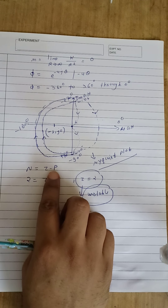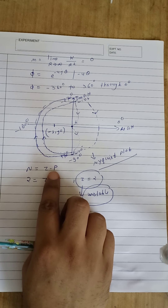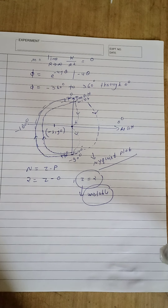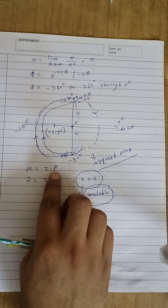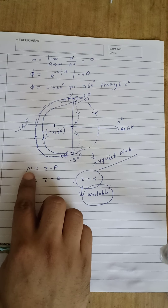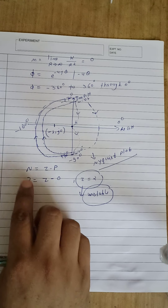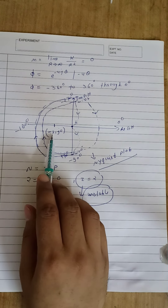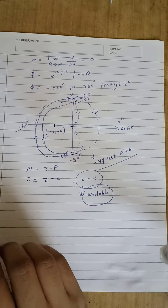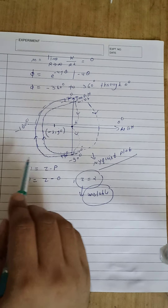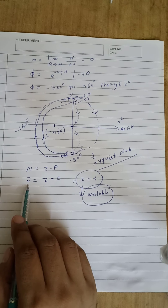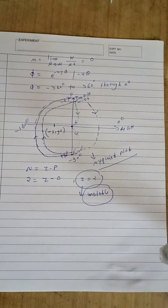P means the number of poles for the open loop system present in the right half of the s-plane. According to the given open loop function, we don't have any pole in the right half of the s-plane, so P becomes zero. N means the number of encirclements. Here the Nyquist plot encircles the critical point minus 1 comma j0 by two times in the clockwise direction, so we have N equal to 2. Thank you.